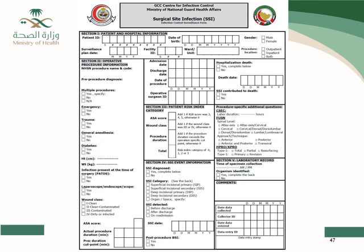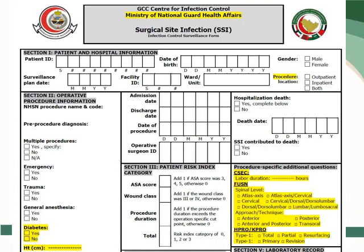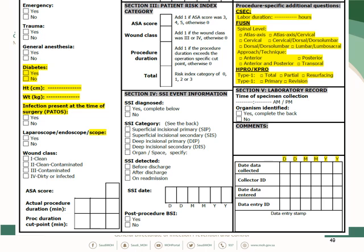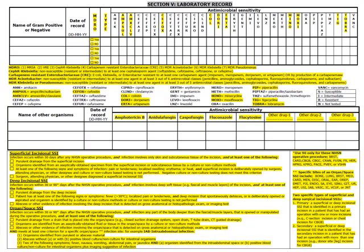For SSI data analysis, the data collection form includes: name of operative procedure, admission and discharge date, whether emergent or trauma, general anesthesia, diabetes, risk index category, whether SSI occurred, and if so, what type — superficial primary or secondary, deep primary or secondary, or organ space. Risk index category items include ASA score, wound class, and procedure duration. The organism identified is also recorded, noting whether it is an MDRO.